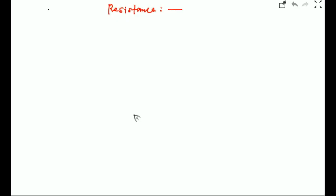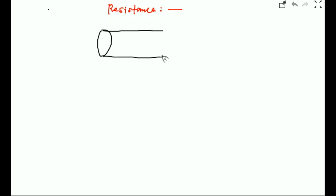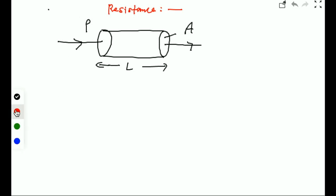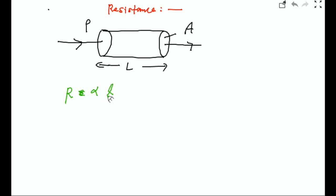Today's topic is resistance. To define the resistance of a conductor: suppose you have a conductor with current flowing through it. The given length of this conductor is l, the area of cross section is A, and the resistivity of the material is rho. You can say R is directly proportional to the length and inversely proportional to the area.